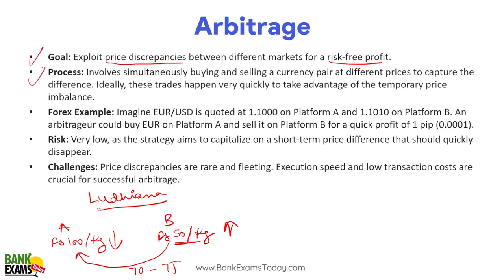In currency markets, you are buying a currency pair from one market and instantly selling it in another platform and making profit out of it. Risk is very low because transactions happen very quickly. Arbitrage opportunities are very rare, and transaction charges and taxes reduce the benefit most of the time. Still, arbitrage mutual funds are available in the market, and arbitrage is done in crypto markets and commodity markets. Even BSE and NSE sometimes have price differences in stocks — that is arbitrage.